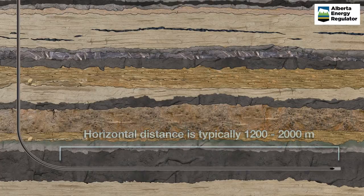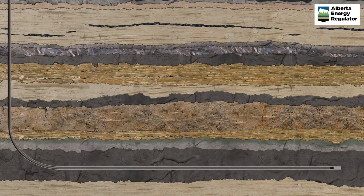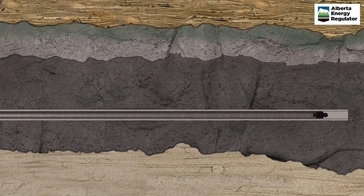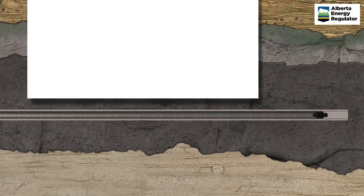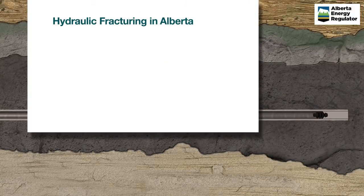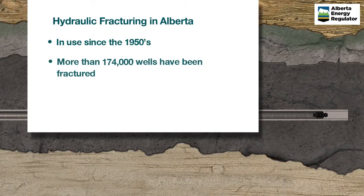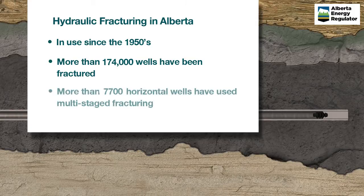The operator can now begin the completion phase, which readies the well for production. While many people believe hydraulic fracturing is a new technology, it's really nothing new at all. However, the technology has evolved over time. In Alberta, it has been in use since the 1950s. In fact, more than 174,000 wells have been fractured during that time. However, multi-staged fracturing in horizontal wells is newer to Alberta. More than 7,700 horizontal wells have been fractured.